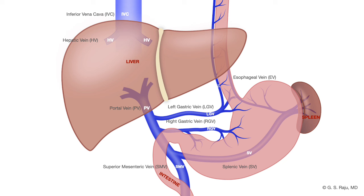One more important group of veins to keep in mind are those that drain the fundus of the stomach and the upper portion of the greater curvature — these are the multiple short gastric veins. They drain into the splenic vein, which then joins the superior mesenteric vein to form the portal vein.